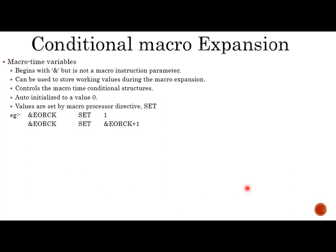A subtopic here is macro time variables. Macro time variables begin with ampersand but are not macro instruction parameters. Anything starting with ampersand that is not a macro instruction parameter can be used to store working values during macro expansion. It controls macro time conditional structures and auto-initializes to a value of 0. Values are set by the macro processor directly using the SET directive.